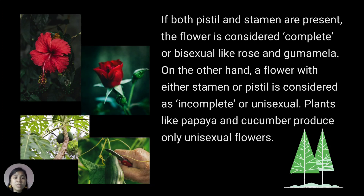If both stamen and pistil are present, the flower is considered complete or bisexual, like rose and gumamela. On the other hand, a flower with either stamen or pistil only is considered incomplete or unisexual. Plants like papaya and cucumber produce only unisexual flowers.